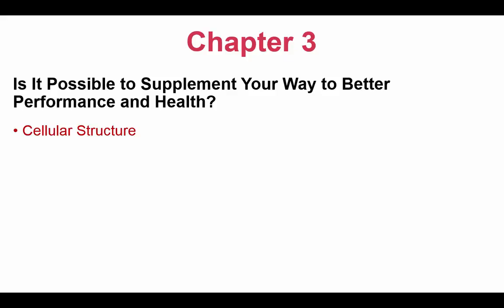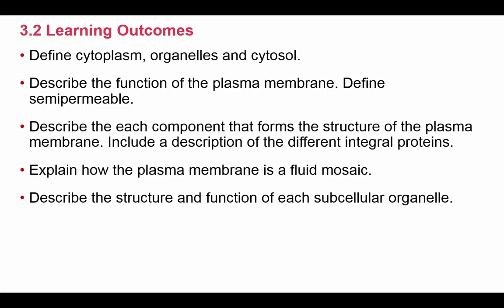In chapter 3, we're going to focus on cellular structures — looking at the parts of the cell — and we're going to cover these learning outcomes: defining cytoplasm, organelles, and the cytosol; describing the function of the plasma membrane; defining the term semipermeable; describing each component that forms the structure of the plasma membrane, including a description of the integral proteins; explaining how the plasma membrane is considered to be a fluid mosaic; and describing the structure and function of each subcellular organelle.